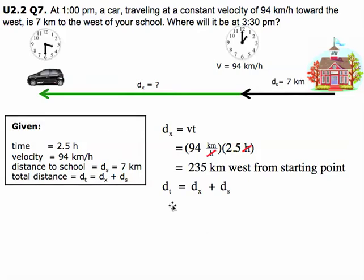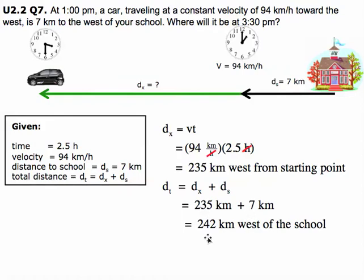So the total distance is dx plus ds. We just put in our numbers, which is 235 plus 7, which equals 242 km west of the school. So the car is 242 km from the school.